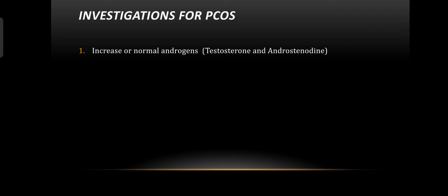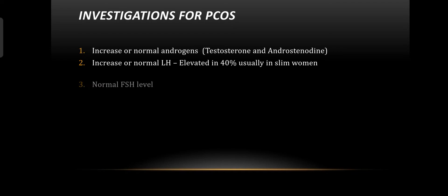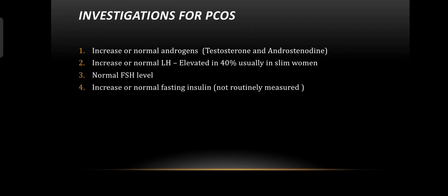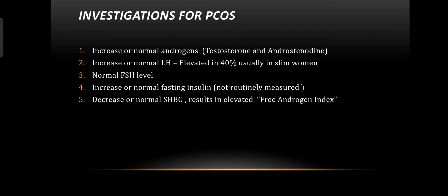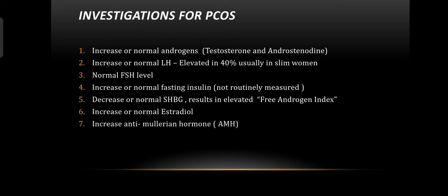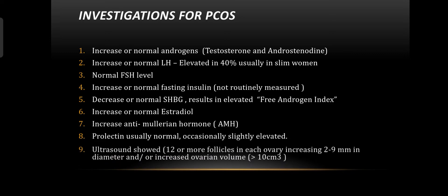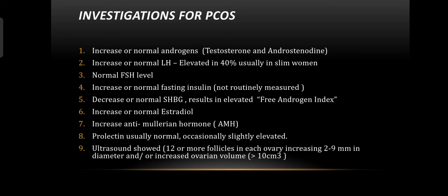Investigations for PCOS include: increased or normal androgens — testosterone and androstenedione; increased or normal luteinizing hormone (LH), elevated in 40 percent, usually in slim women; normal FSH level; increased or normal fasting insulin (not routinely measured); decreased or normal sex hormone binding globulin, resulting in elevated free androgen index; increased or normal estradiol; increased anti-Müllerian hormone; prolactin usually normal but occasionally slightly elevated. Ultrasound shows 12 or more follicles in each ovary measuring 2 to 9 mm in diameter, or increased ovarian volume greater than 10 cubic centimeters.